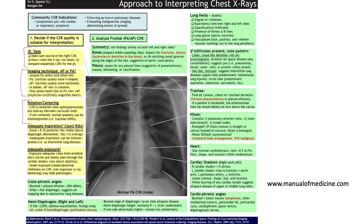Assess whether the X-ray is rotated by looking at the medial ends of the clavicles — these should be equidistant from the spinous processes. If not, there is rotation. Check if the X-ray is adequately inspired: normally there should be at least eight to ten posterior ribs visible per hemithorax.